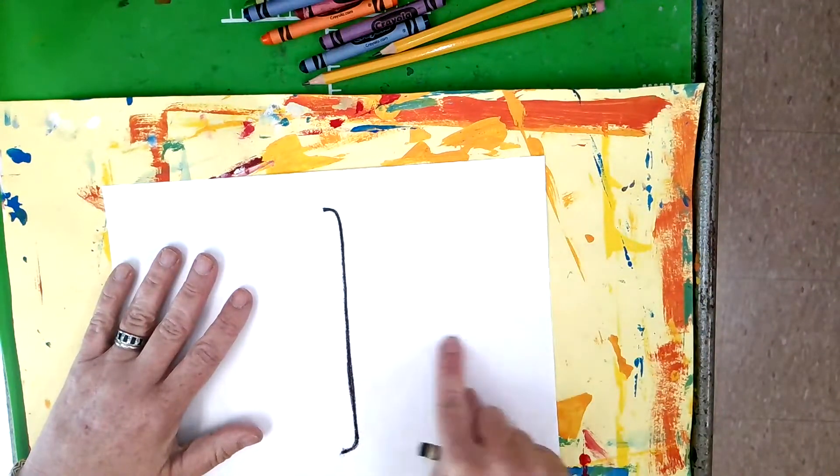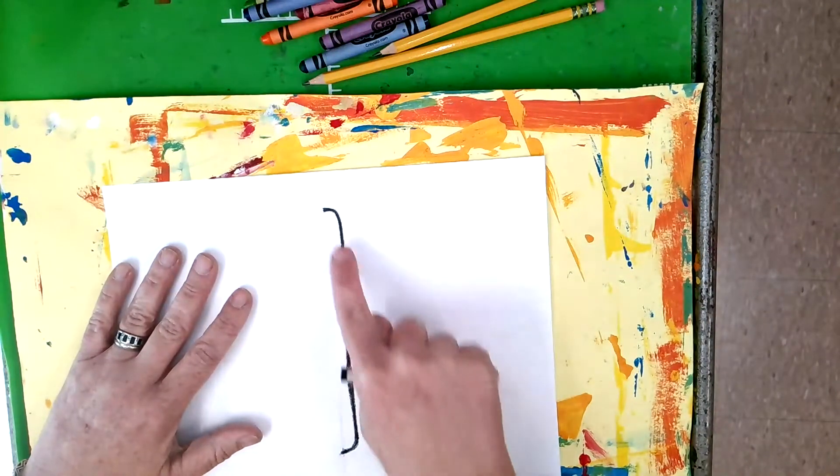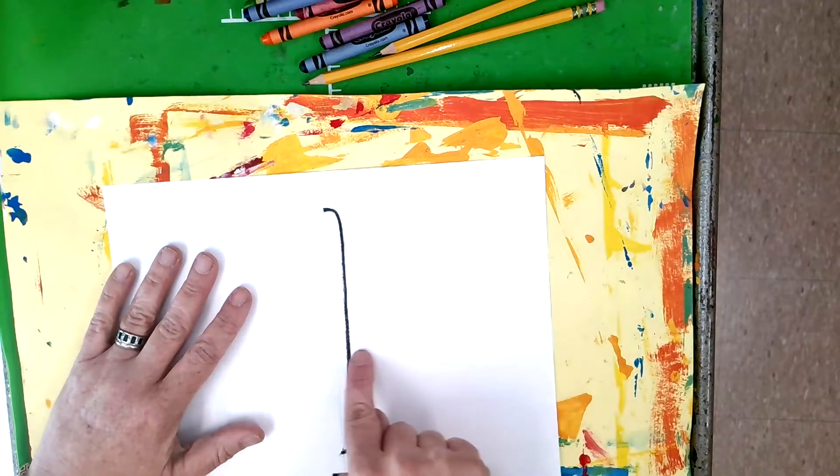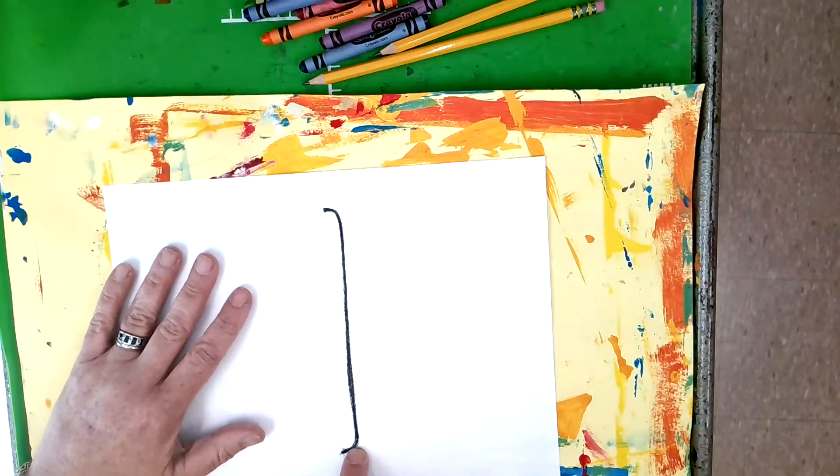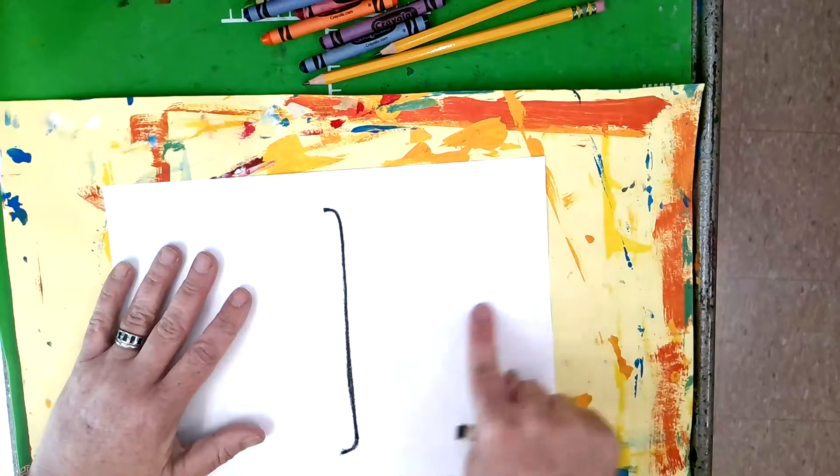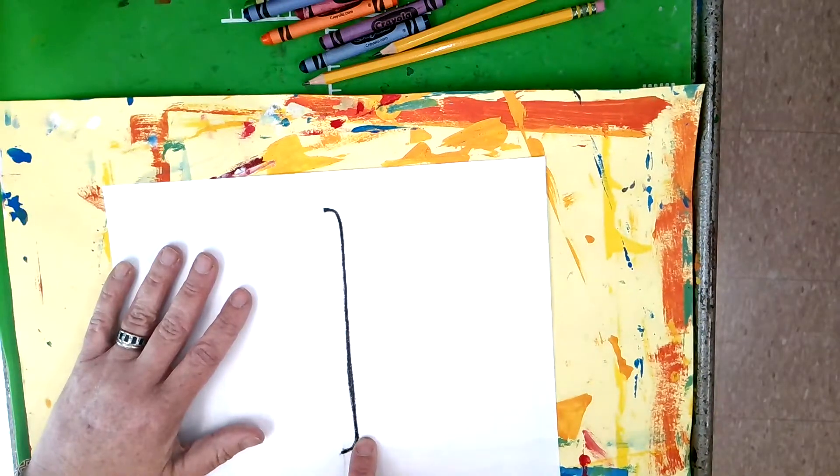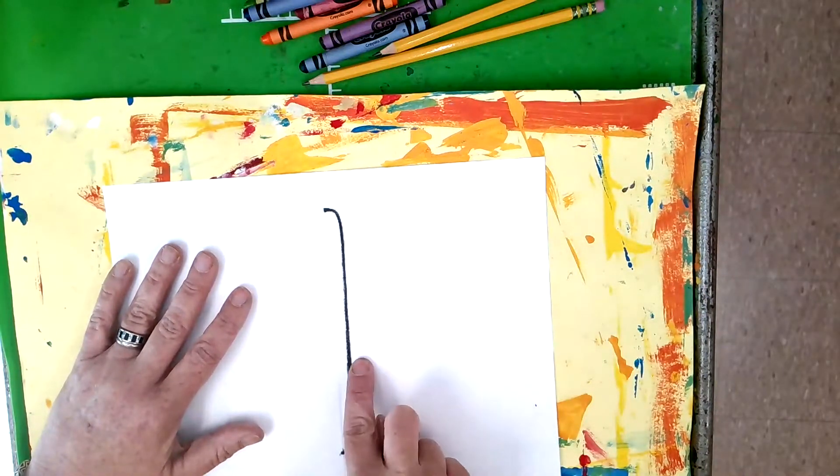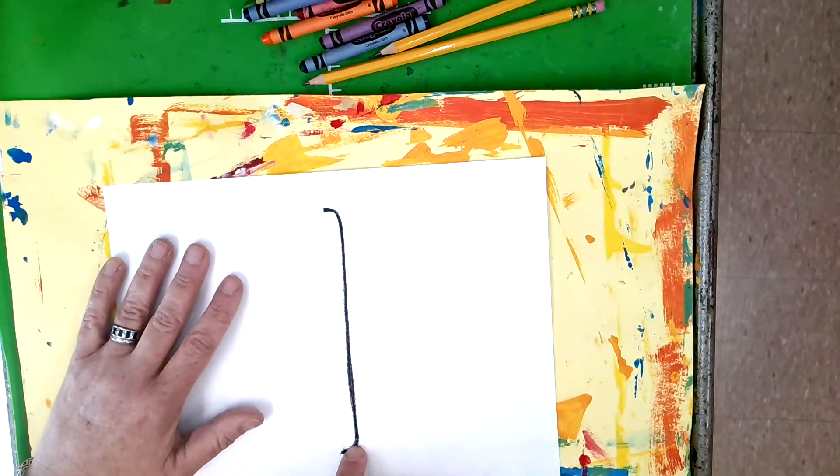Draw that right on the fold. Now for the wings. Think about a letter B, a big letter B or a capital letter B. Sometimes it helps to draw it with your finger a few times just so you can get the idea of where you want those lines to go.